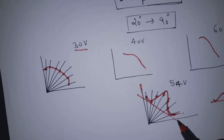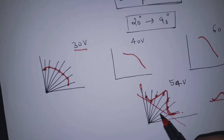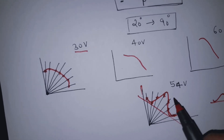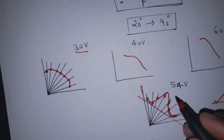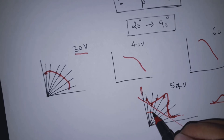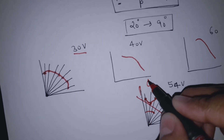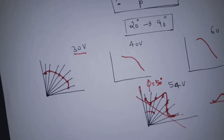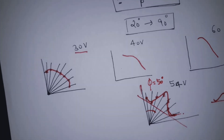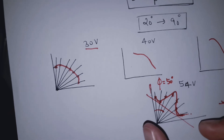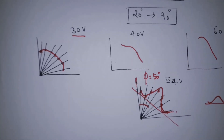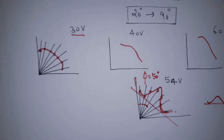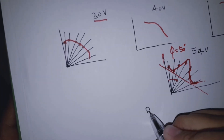The diffraction pattern was noted, and the peak angle is at 50 degrees (φ = 50°). To find the wavelength, we use Bragg's law.